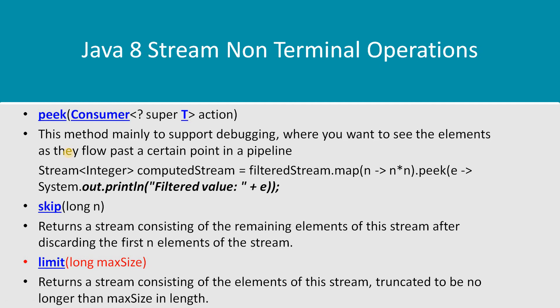Next is peek, which is a very handy function for debugging. You cannot use peek as a standalone operation, but it comes into picture when you want to see the intermediate result of a stream. For example, after applying filter and map, if you want to inspect the elements at that point, you can use peek to print those values and observe the intermediate stream results.